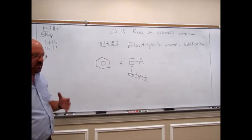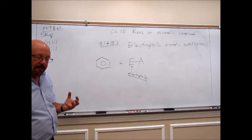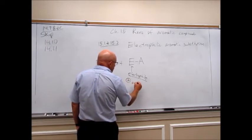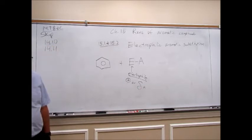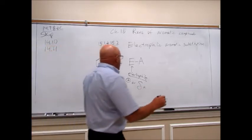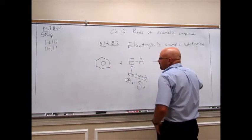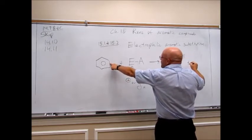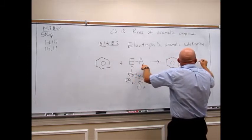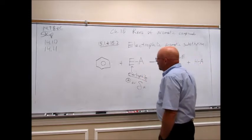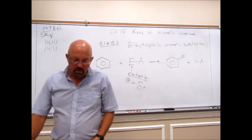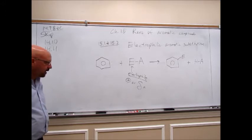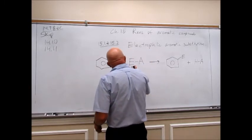An electrophile either has a full positive charge or a very large partial positive charge. We are going to substitute the electrophile onto the ring for one of those hydrogens. That hydrogen will go with whatever A is, and we get some acid as a byproduct, but we have done a substitution onto the aromatic ring.